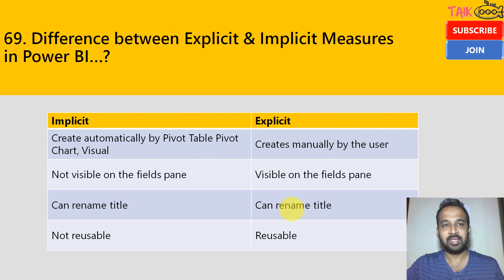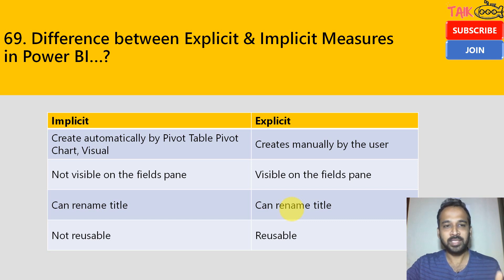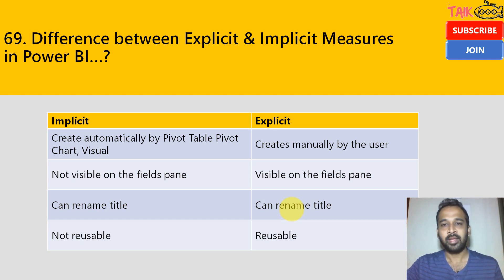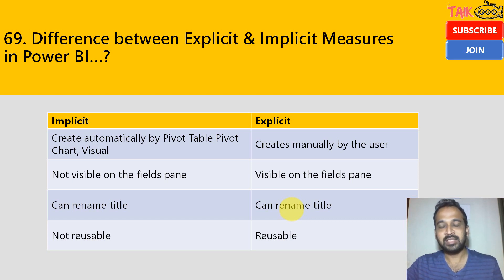The next question is the difference between explicit and implicit measures in Power BI. Here's the difference in the table. Implicit measures are created automatically by pivot tables, pivot charts, or visuals — the matrix table in Power BI — whereas explicit measures are created manually by the user.